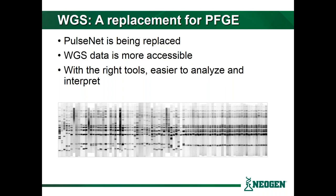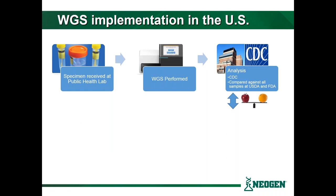If you can count the number of bands on an old PFGE slide — some of those similar isolates on the right-hand side of your screen — you can imagine that the resolution between those 10 to 20 bands could be limited. With whole genome sequencing, we gain a lot of resolution because we're looking at millions and millions of base pairs within a bacterial sequence.